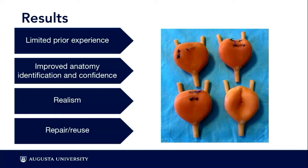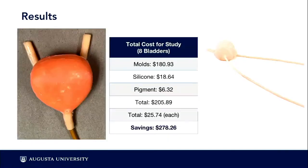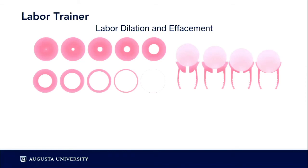Each resident performed a bladder repair — two residents per test station. When a client would like to reuse the bladders in the future, all we need to do is remove the sutures, apply a clear layer of silicone, and it's good to go. For cost analysis: the CENDAVR model was over $300 for one model and isn't even hollow. Our model, excluding labor and machine costs, came out to about $25 per model — a significant difference.